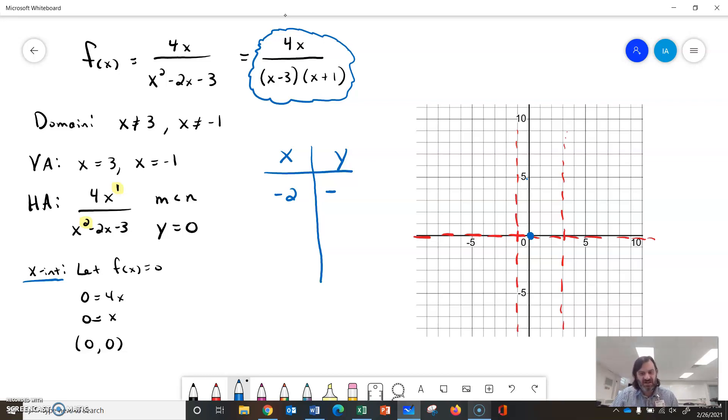I know to the left of -1, everything is negative because I can't cross the x-axis. So I'm going to make it hug both the horizontal and vertical asymptote over there.